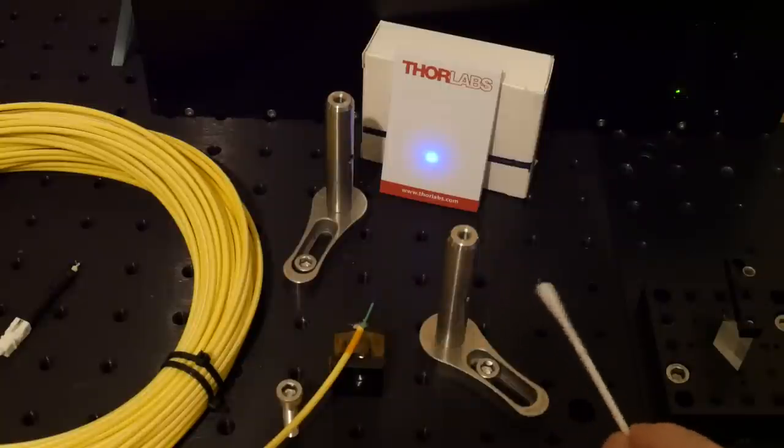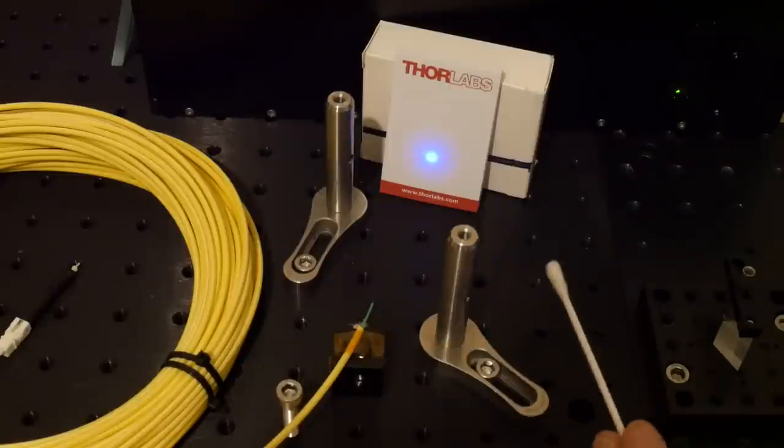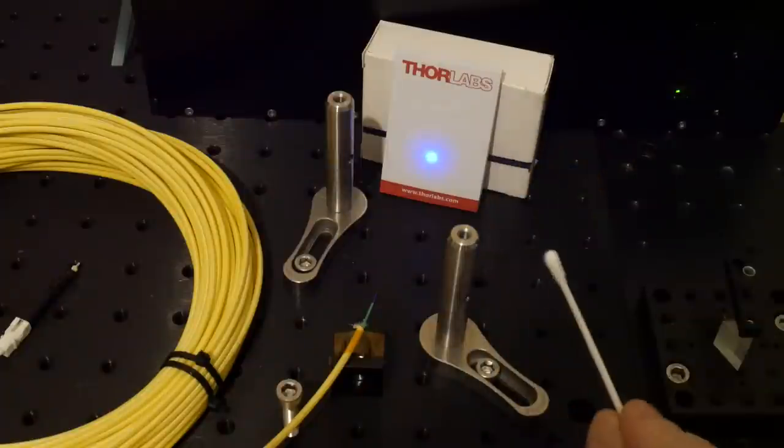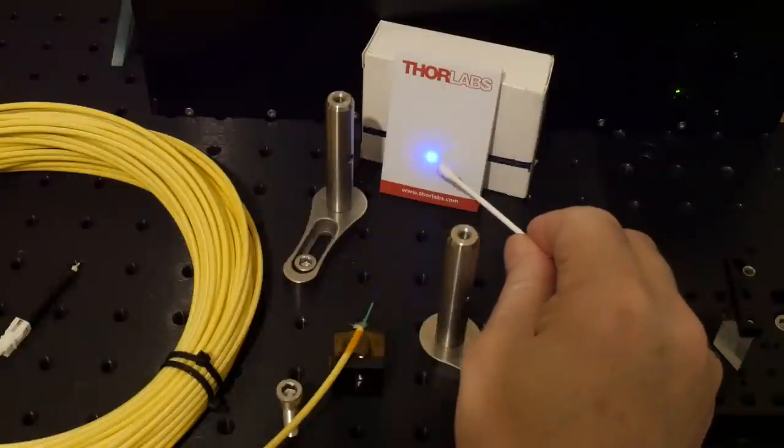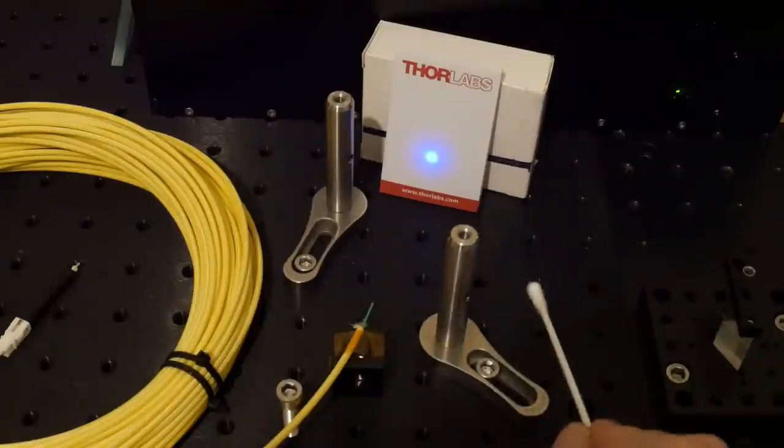In fact if you recall from the previous video what we actually had out of 9 micron cable was a very large 30 millimeter diameter spot and it was actually doughnut shaped. This looks like a pure Gaussian spot. Absolutely fascinating.